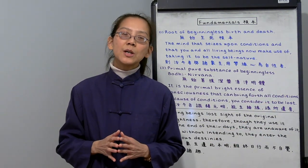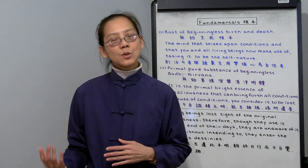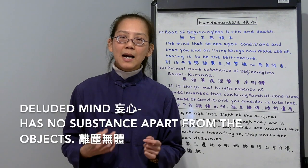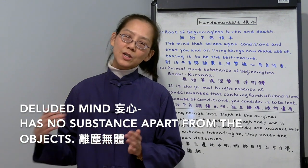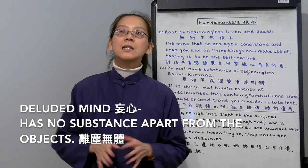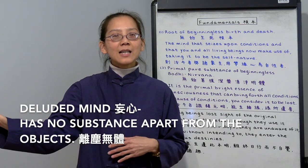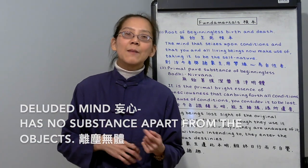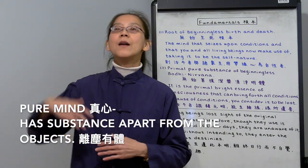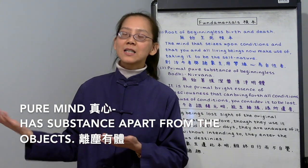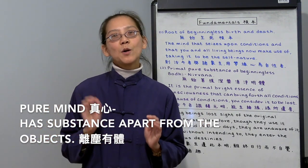So how do we know if we are using our deluded mind or our pure mind? In the sutra it says deluded mind has no substance apart from the objects, from the external conditions. If this thought or this emotion is coming from stimulants from outside, that's your deluded mind. If this thought actually has substance apart from the objects, apart from all external conditions, it still exists. That means it's your pure mind.